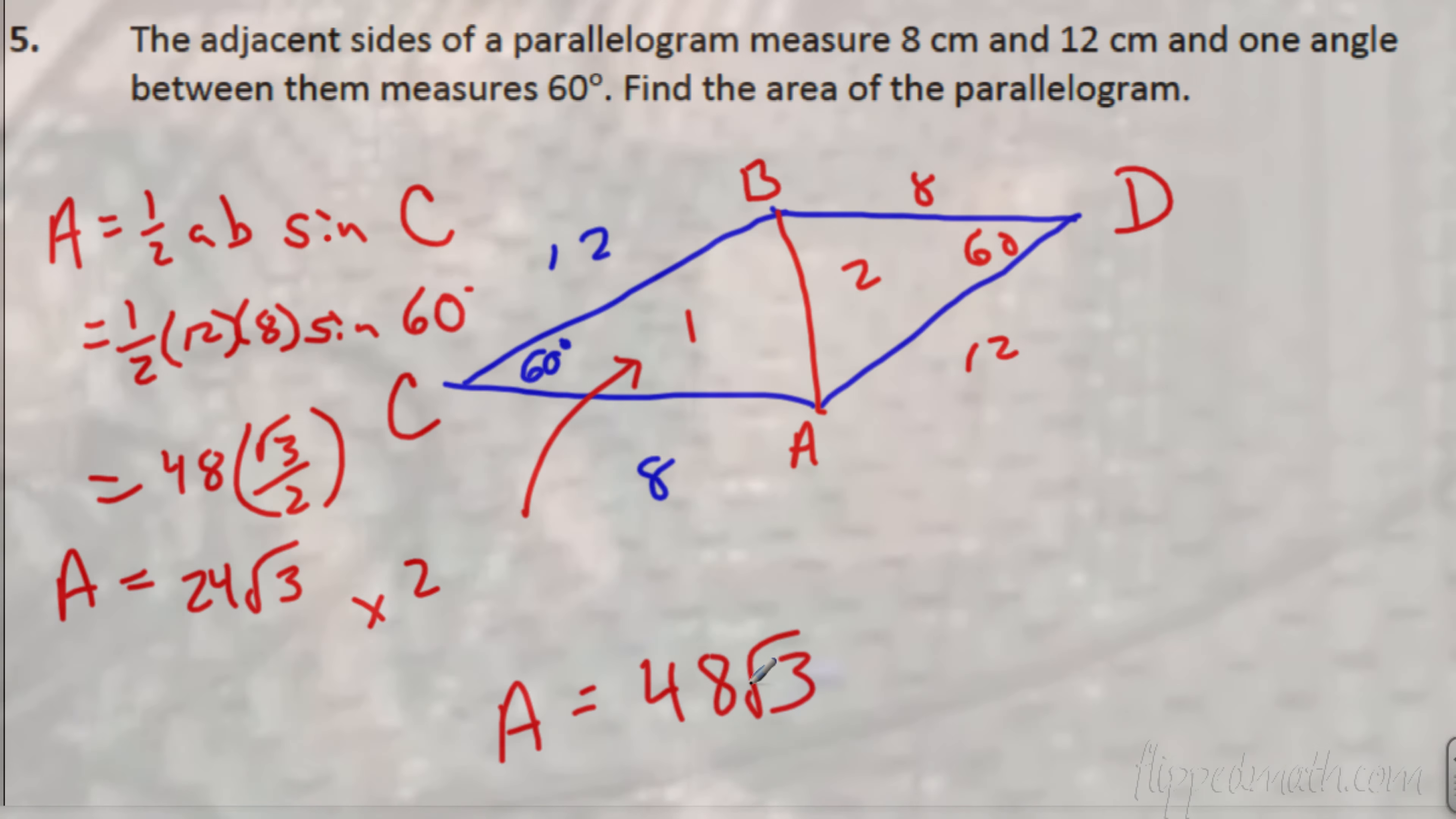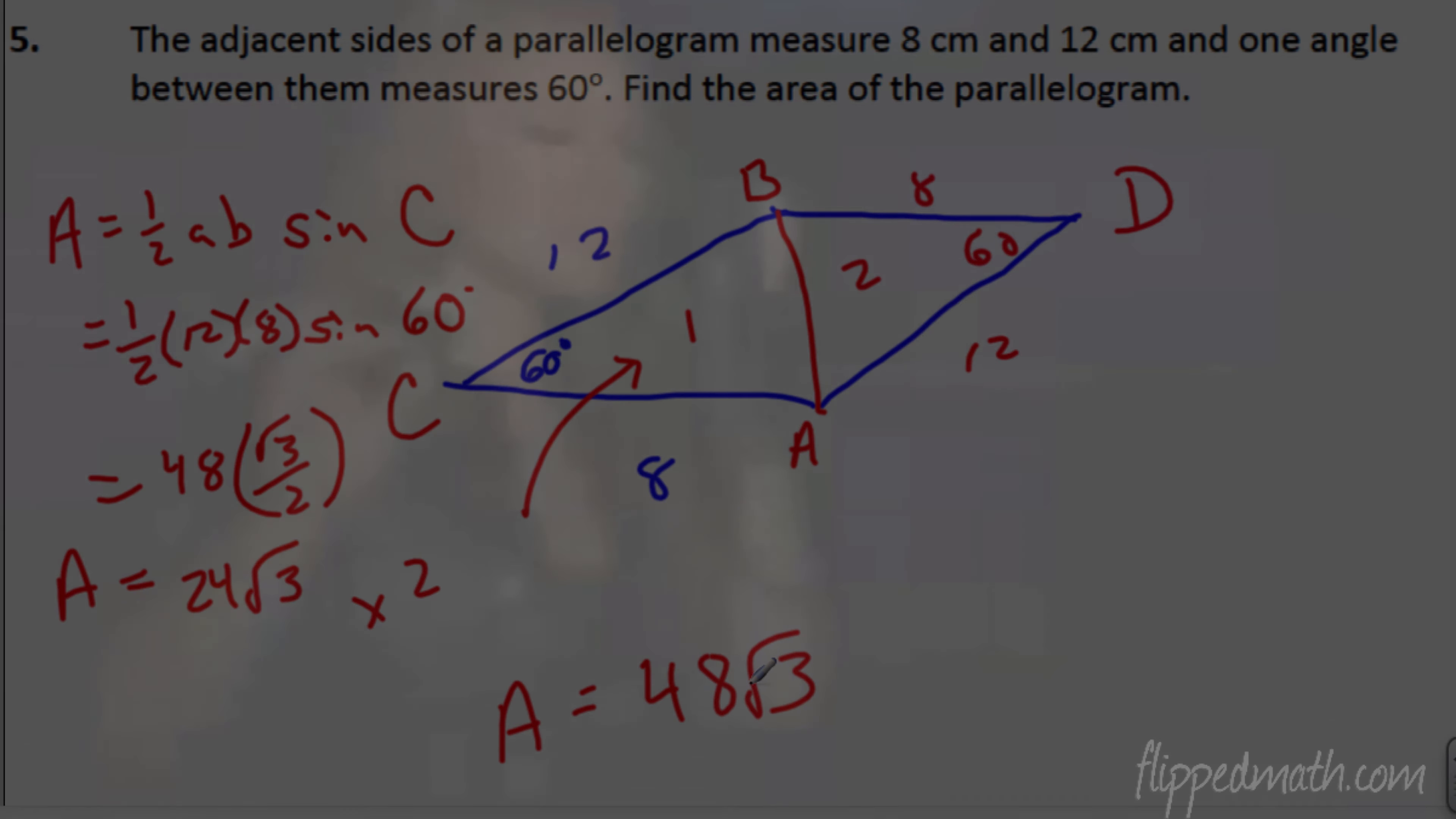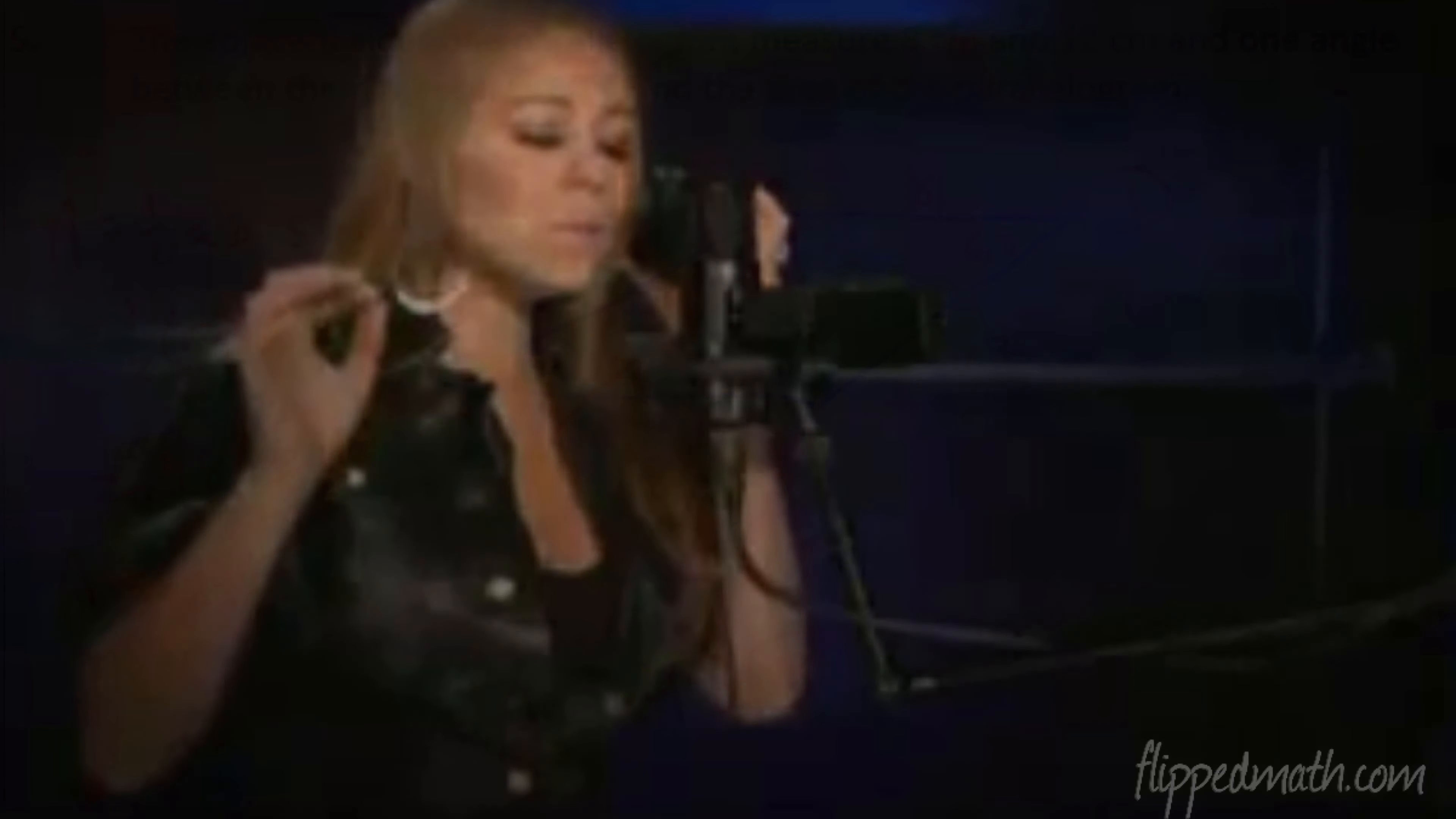So, you have two formulas. One half A, B sine of C. And you have Heron's formula or Hero's formula. So that we can listen to some more Mariah. Mr. Bean will be happy. Mr. Kelly Baum will remember. It's nice to be important. More important to be nice. One more thing. You're going to need a calculator for the application problems. Just giving you a heads up.